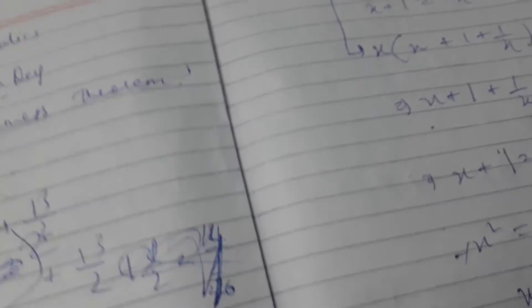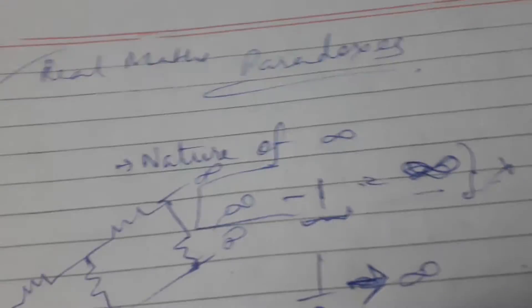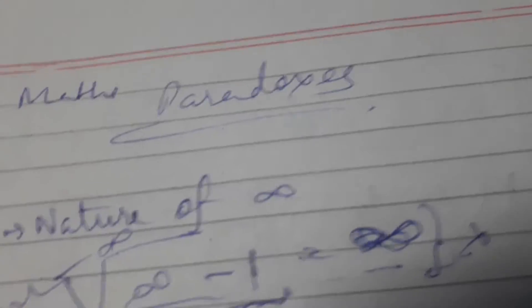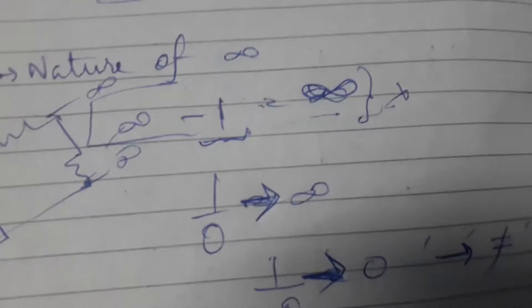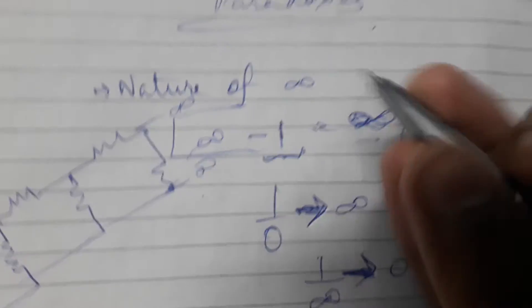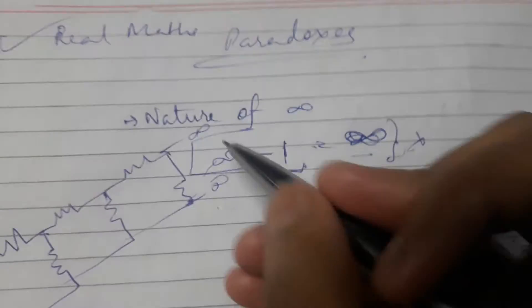Now, talking about real mathematical paradoxes — consider the nature of infinity. Even today we don't have sufficient information about it. What's infinity? It's a very big number, impossible to count. But if I say what's infinity minus 1, we'd say it's still infinity — because 1 is almost nothing compared to infinity.